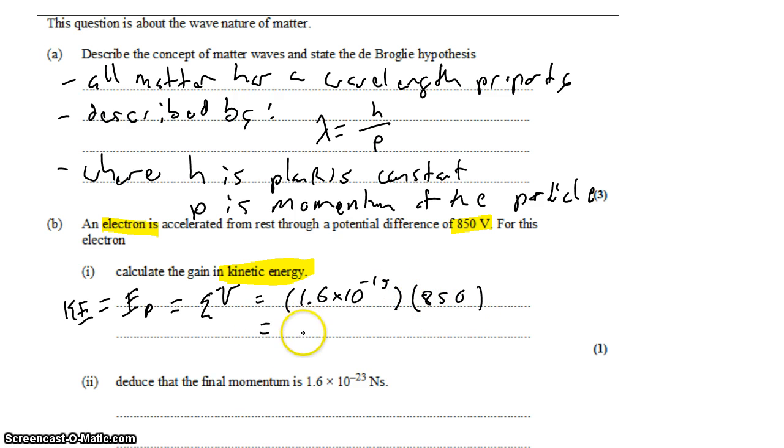Multiply those two together, and you get 1.36 times 10 to the negative 16 joules.